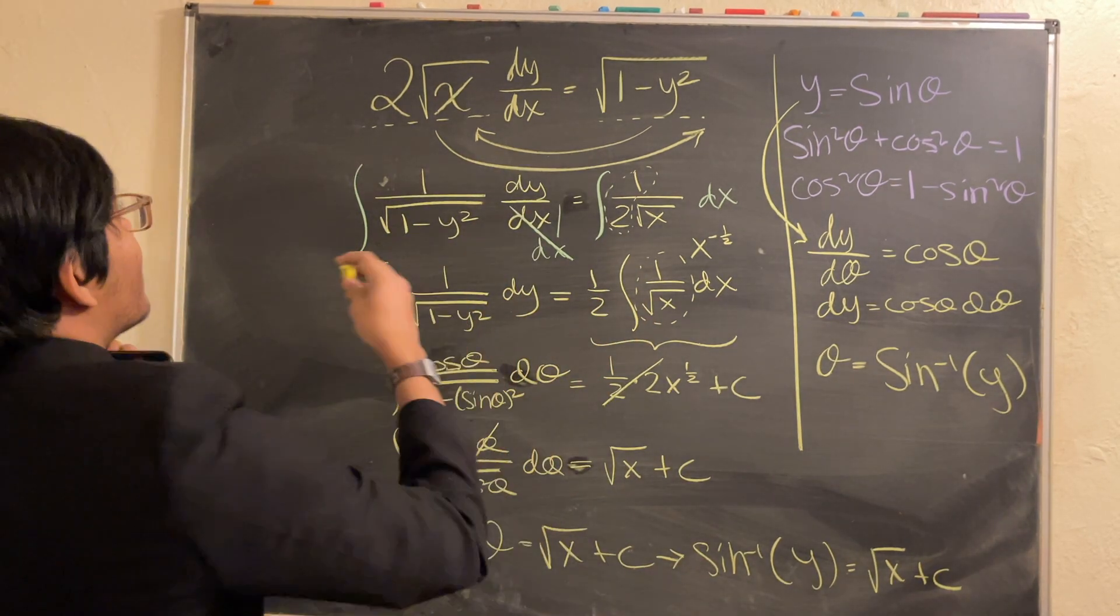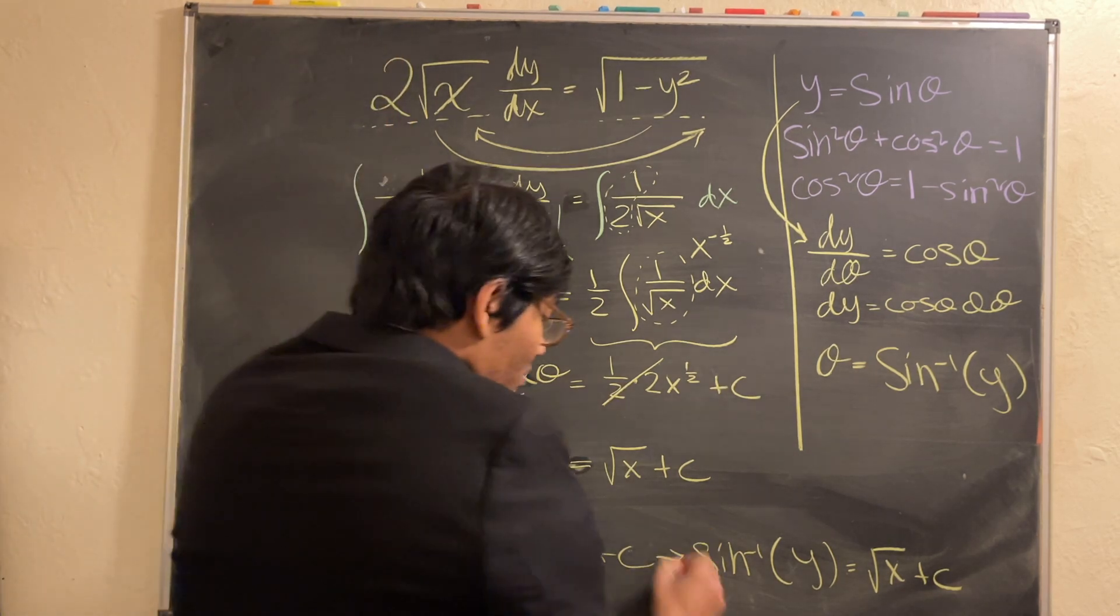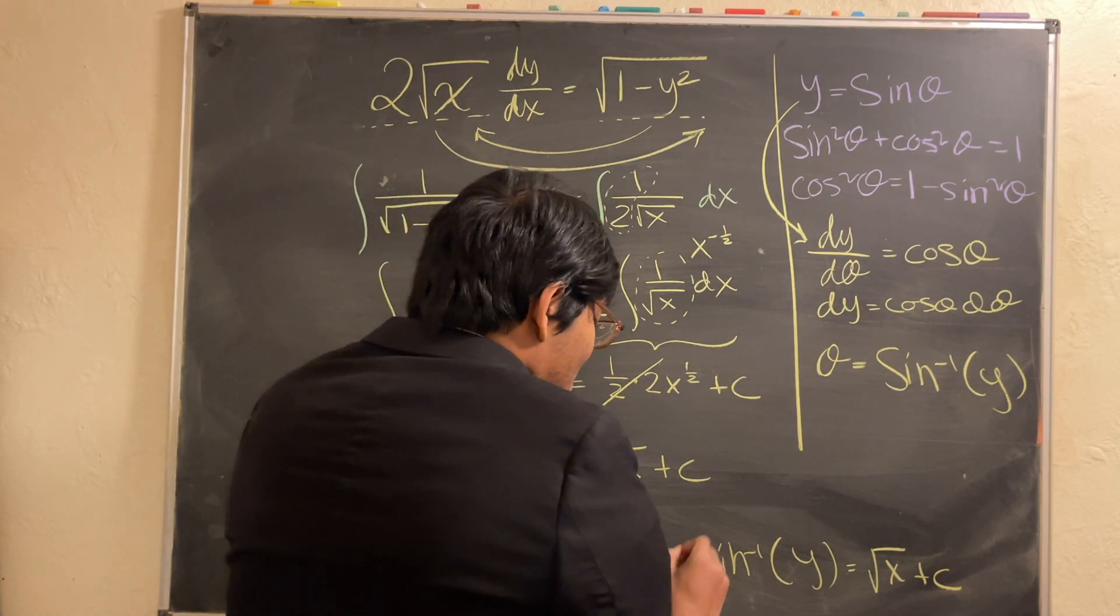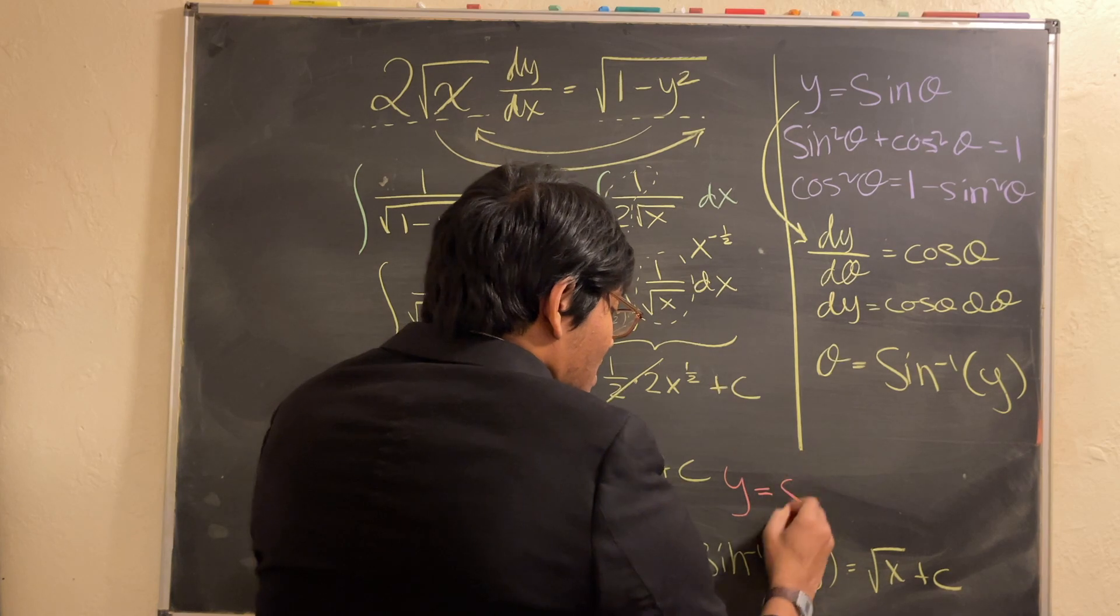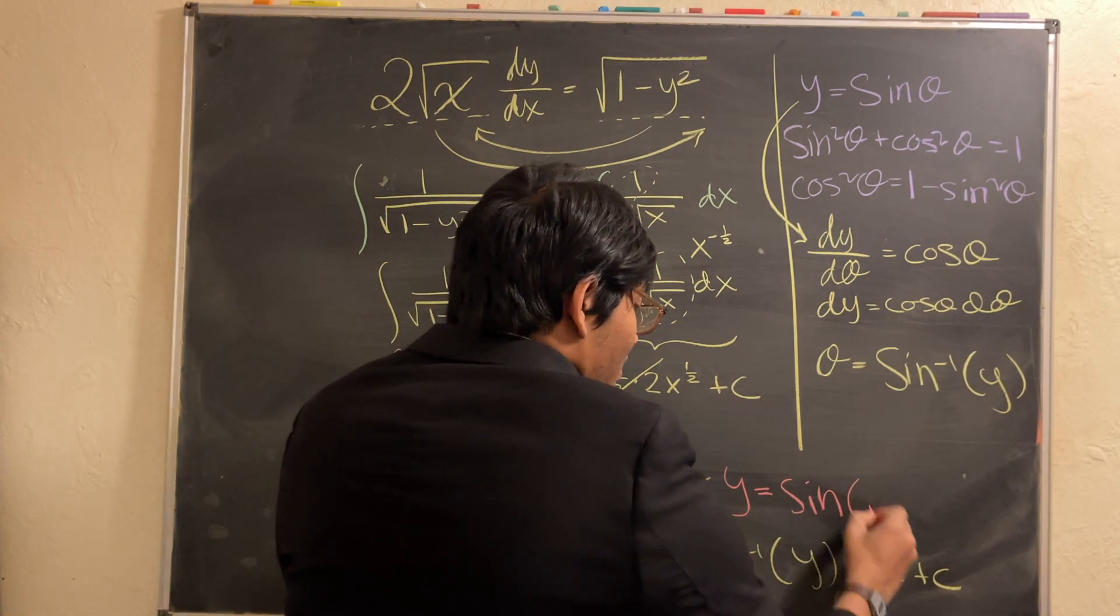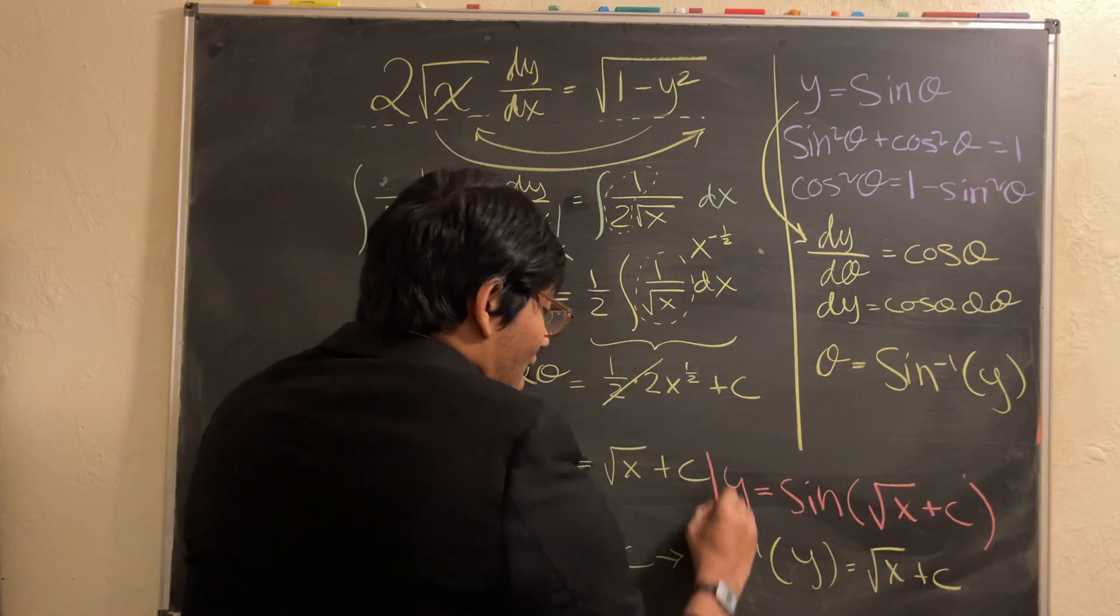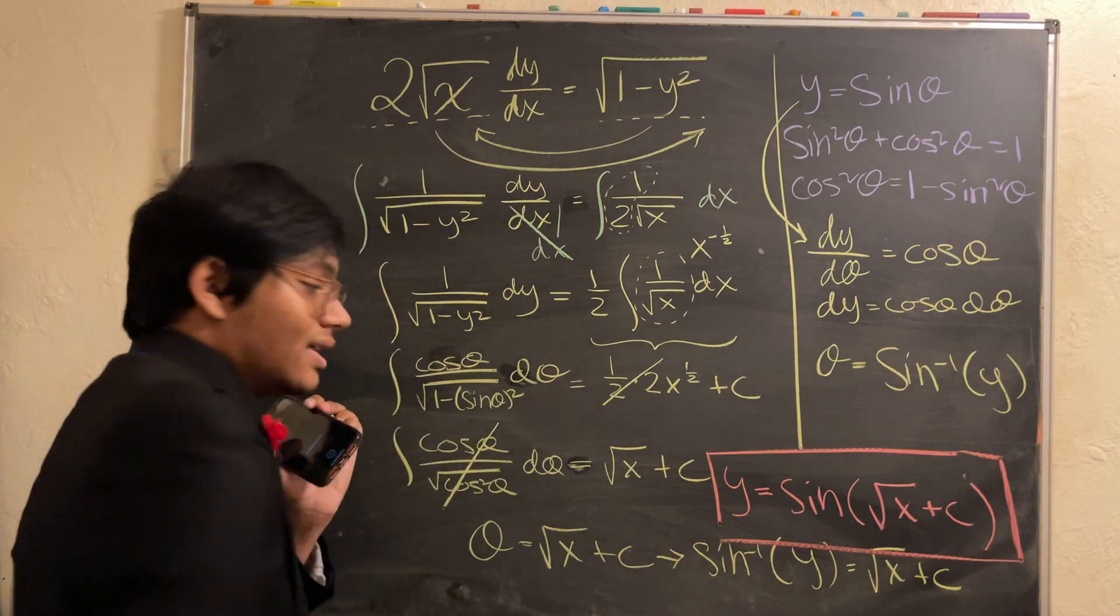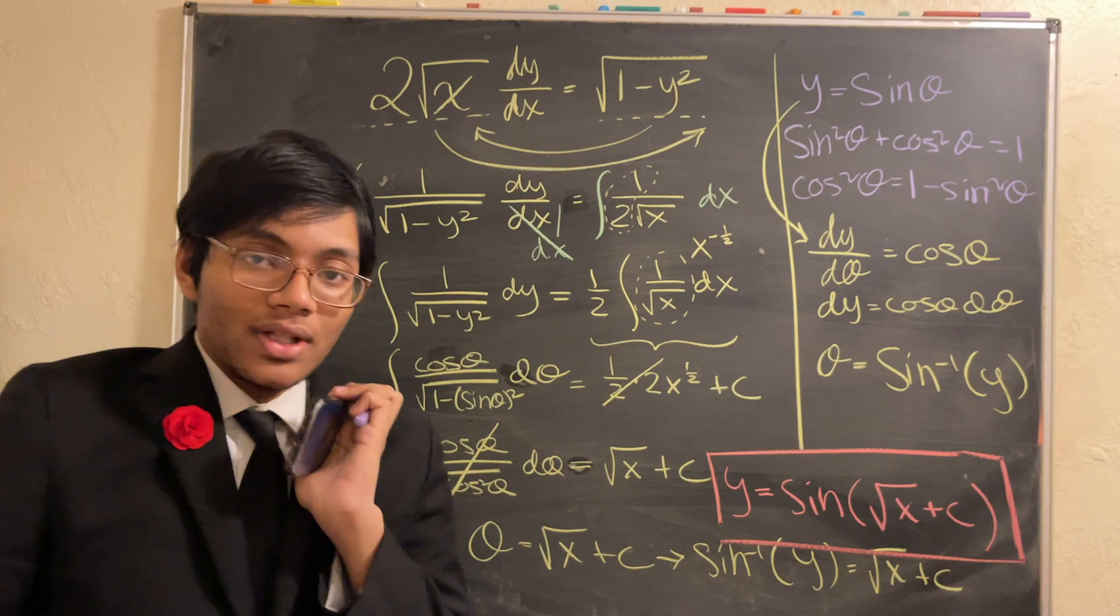And so, now, if I want to solve for y, what can I do? Well, I can take the sine of both sides. So, if I take the sine of both sides, what will I be left with? I'll be left with y is equal to sine of the square root of x plus c. And that, ladies and gentlemen, is your final answer. Thank you for watching this episode of Berry Science Lab Differential Equations. We're going to check you out in the next one.